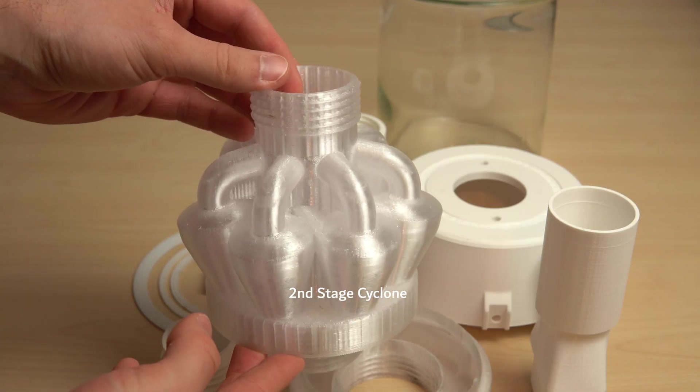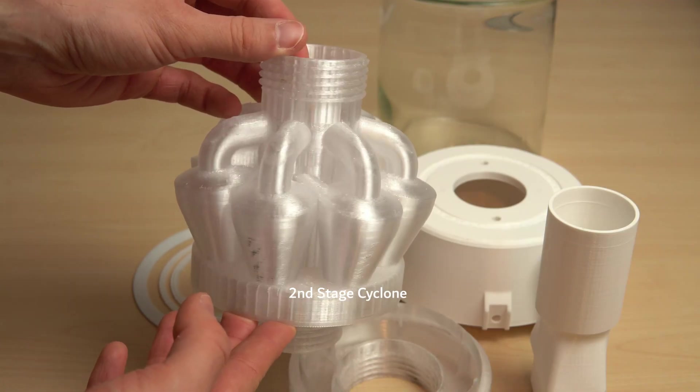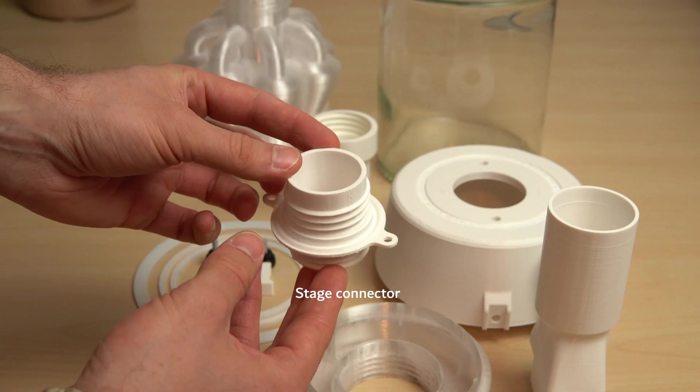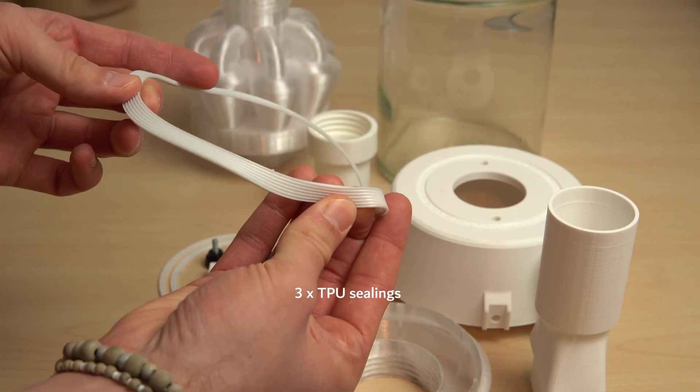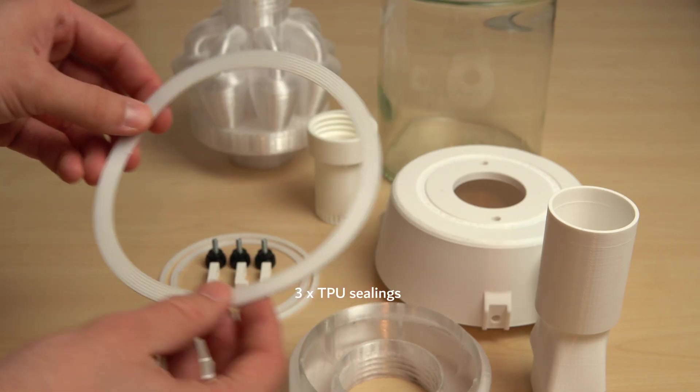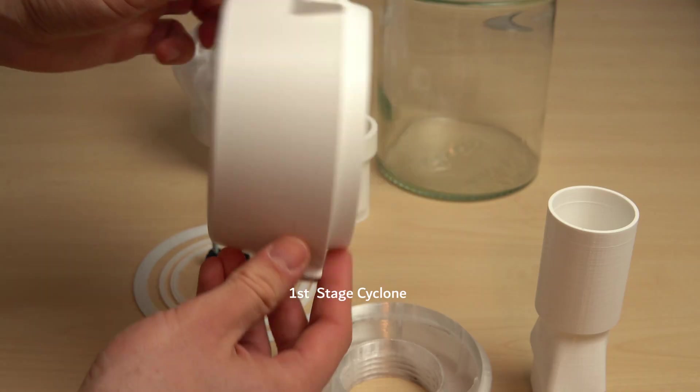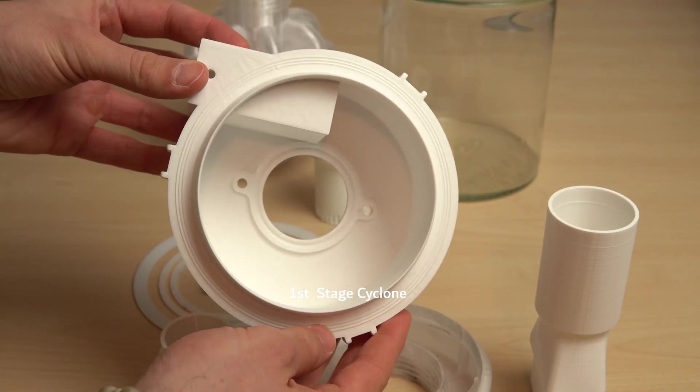I tried making the upper stage from a transparent filament, so that maybe it would be somewhat visible how the particles are collected. The TPU sealings have a serrated pattern on top, so that they grip better into the material. The same on the surfaces of the counterpart that the sealings are attached to.